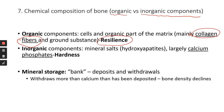You also have inorganic components, which are actually the majority of bone matrix — over 60%. That's mostly mineral salts, specifically hydroxyapatite, which is basically salts of calcium and phosphate. These inorganic mineral salts are very hard, so they provide hardness — that's what makes your bone really strong and hard compared to soft tissues or even cartilage.